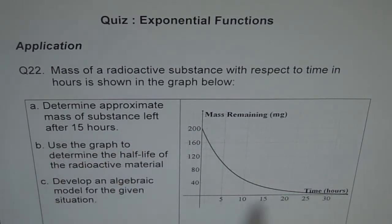Part A: Determine approximate mass of substance left after 15 hours. Part B: Use the graph to determine the half-life of the radioactive material. And the last one, Part C: Develop an algebraic model for the given situation.